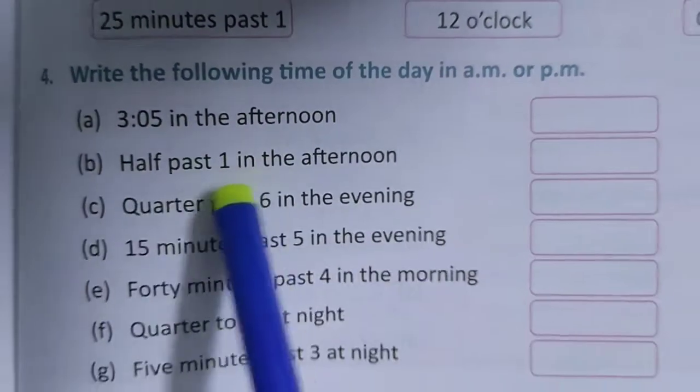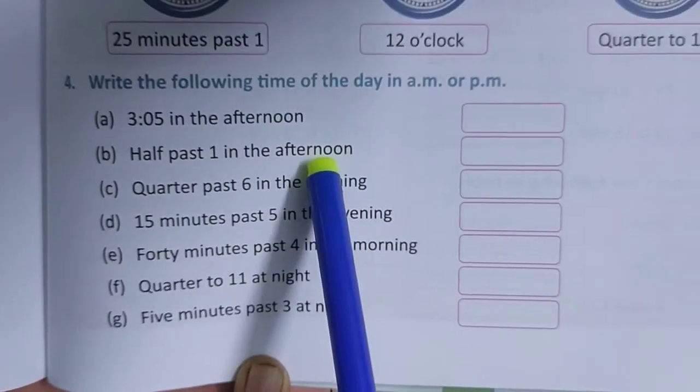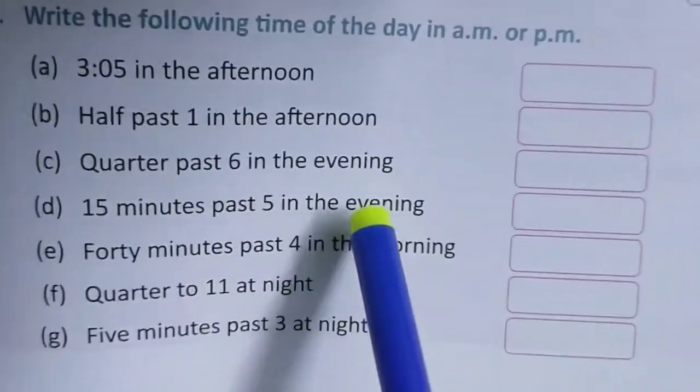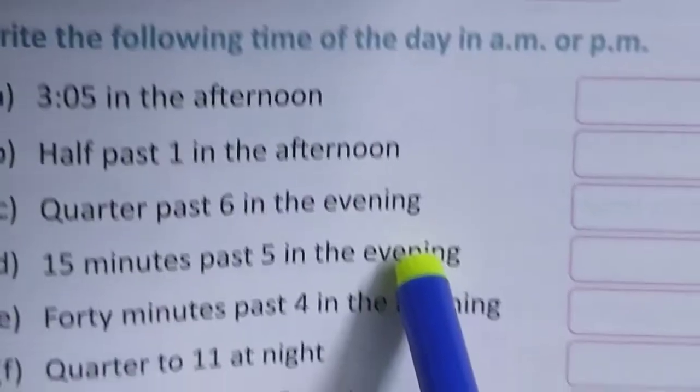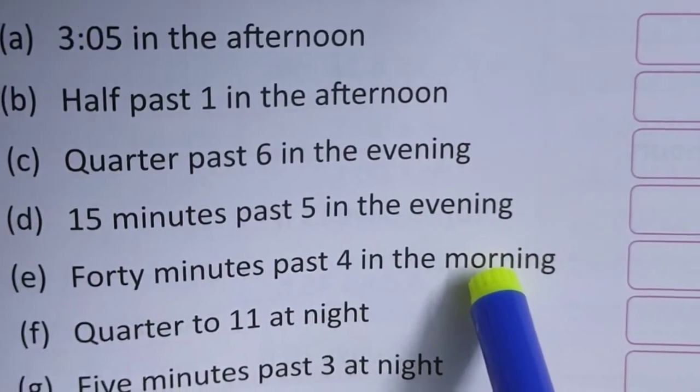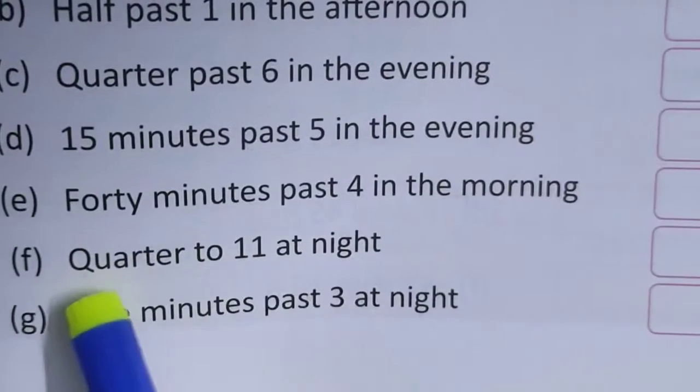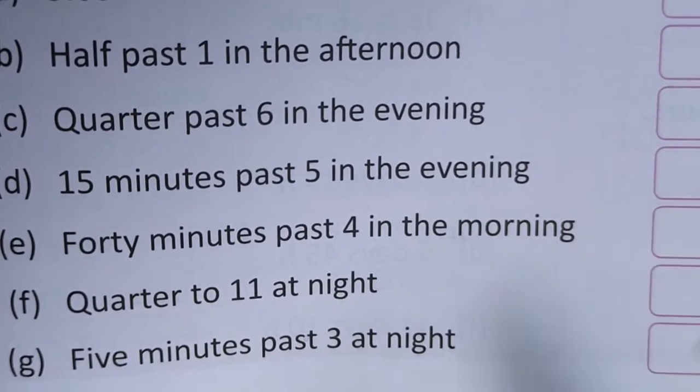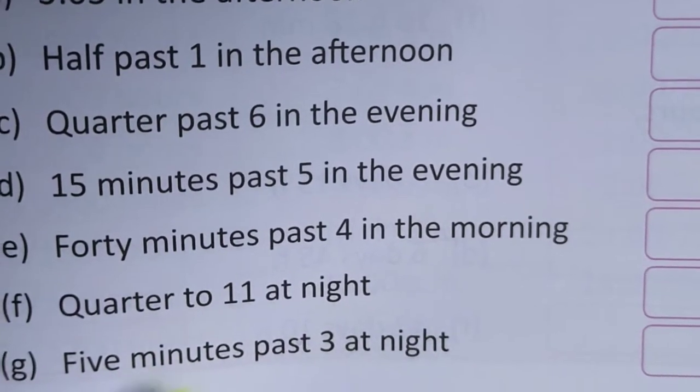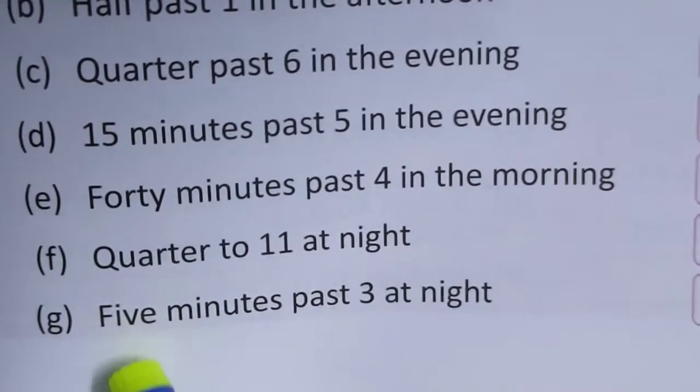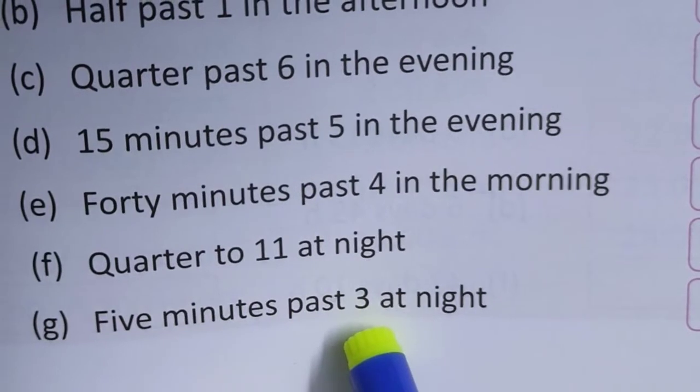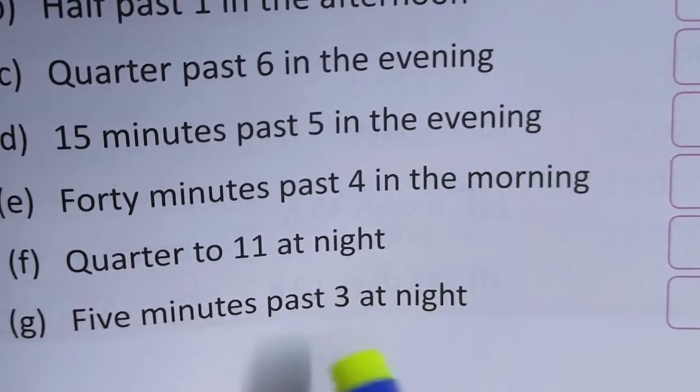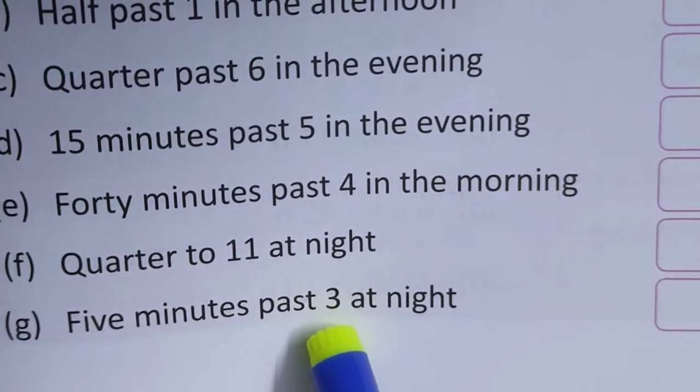Then half past, afternoon means PM. Evening PM. Morning AM. Quarter to 11 that means night. But after 12 it will be morning. Though it is night, but after 12 o'clock it will be AM. See, 5 minutes past 3 at night. After 12 it will be morning.